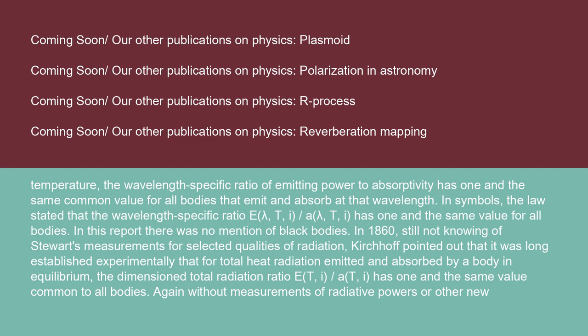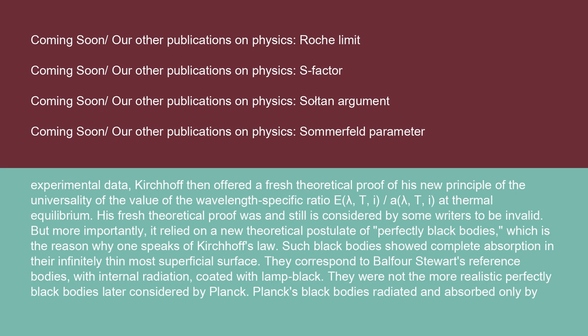Without measurements of radiative powers or other new experimental data, Kirchhoff offered a fresh theoretical proof of his new principle of the universality of the wavelength-specific ratio E(λ,T,i)/A(λ,T,i) at thermal equilibrium. His fresh theoretical proof was and still is considered by some writers to be invalid. But more importantly, it relied on a new theoretical postulate of perfectly black bodies. Such black bodies showed complete absorption in their infinitely thin, most superficial surface. They correspond to Balfour-Stewart's reference bodies with internal radiation coated with lamp black. They were not the more realistic perfectly black bodies later considered by Planck. Planck's black bodies radiated and absorbed only by the material in their interiors; their interfaces with contiguous media were only mathematical surfaces, capable neither of absorption nor emission, but only of reflecting and transmitting with refraction.